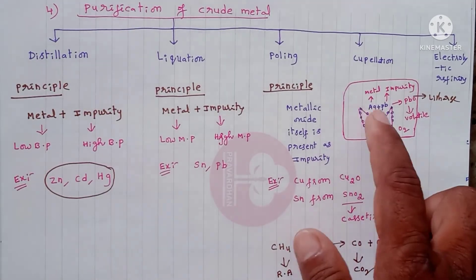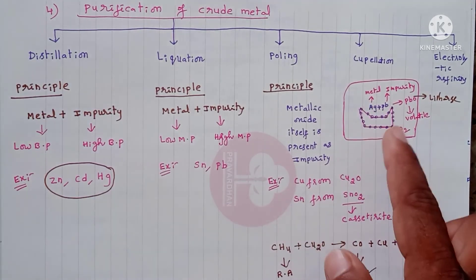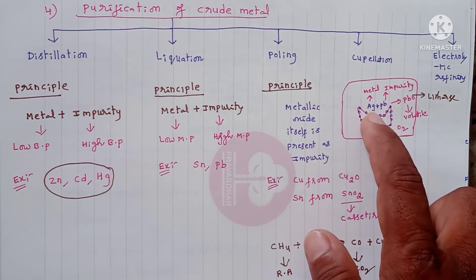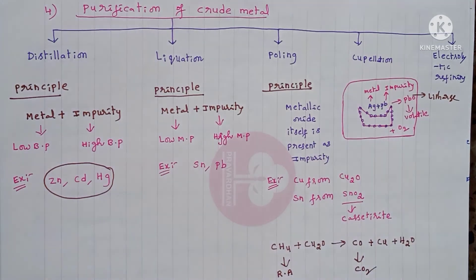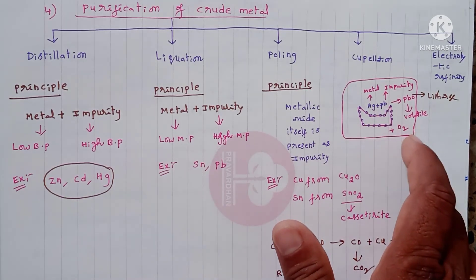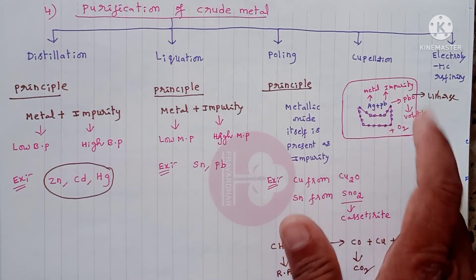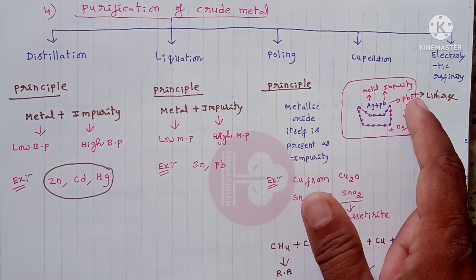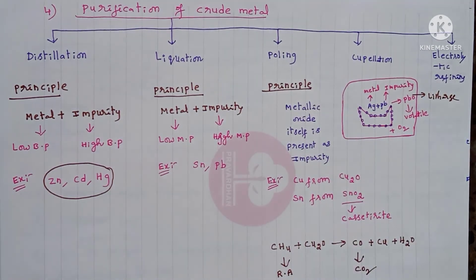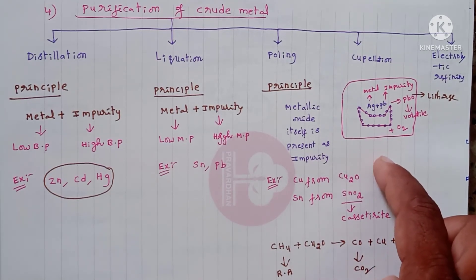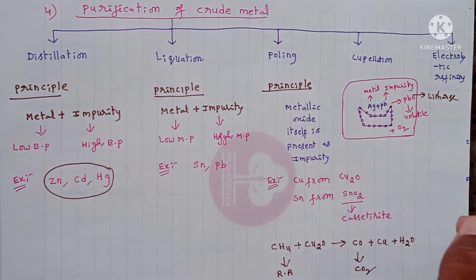This is called the polling method. In cupellation, both the metal and impurity are placed in a cupel — a boat-shaped vessel. Here, silver is the metal and lead is the impurity. Both are heated in a reverberatory furnace. Lead interacts with oxygen and forms lead oxide, called litharge. The lead oxide is a volatile impurity and is removed, leaving only pure silver metal. Cupellation is mainly used for the purification of silver.